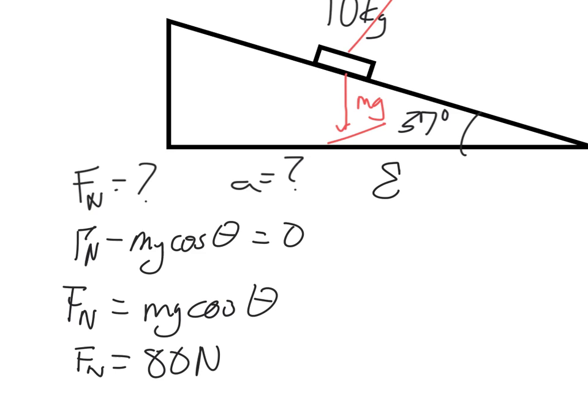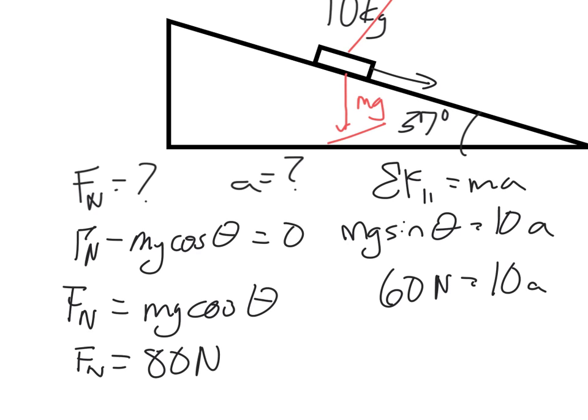For my acceleration, I'm looking at the parallel direction. It's mass times acceleration. My only piece of force going parallel to the ramp is mg sine theta. Remember, sine means down the ramp. Is equal to 10a. So we are left with 100 times the sine of 37. And that is 60. 60 newtons equals 10a. So when we divide by 10, we get 6 meters per second squared equals a.